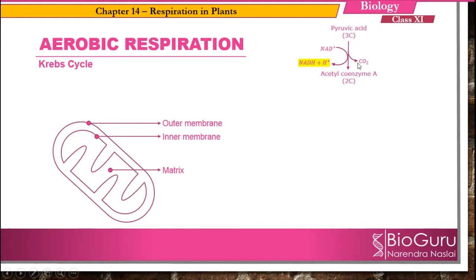One carbon is removed in the form of carbon dioxide, so this process is called decarboxylation. Overall, pyruvic acid undergoes oxidative decarboxylation, and this reaction is catalyzed by the enzyme pyruvate dehydrogenase. Pyruvate dehydrogenase also requires some coenzymes — one of which is coenzyme A — and also requires magnesium ions. This acetyl CoA is then going to enter into the Krebs cycle.